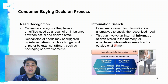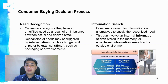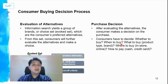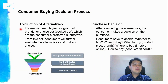External information search is used especially in cases where there is high risk, little knowledge of the product, little experience with it, or a lack of confidence in the purchase. This is where you start seeking information from friends, family, or online sources. After information search, you move on to the evaluation of alternatives.